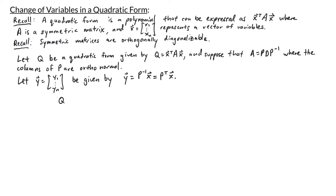Now let's return to our quadratic form. Our quadratic form was Q equals x transpose times A times x. What we can do is substitute the diagonalization in for A, giving us x transpose times PDP inverse times x. Remember that we defined y to be P inverse x, so making that substitution, we can rewrite our quadratic form as x transpose times P times D times y.